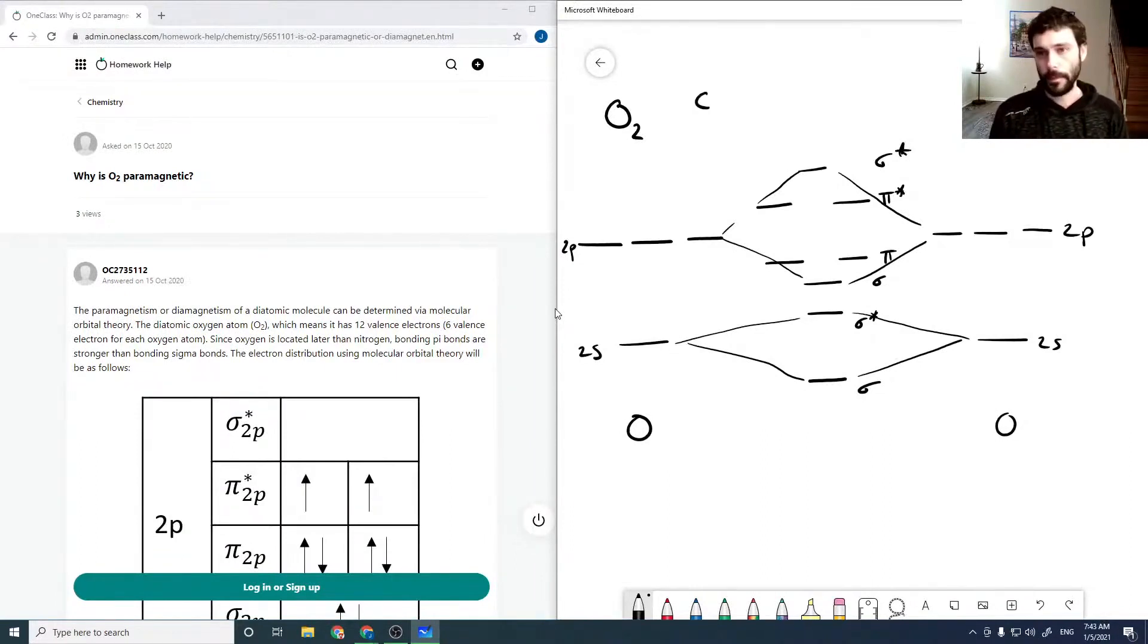It's good to remember that for oxygen and fluorine, this is what it looks like. But before oxygen, we actually flip the pi and the sigma levels. So these two down here would be flipped for carbon and nitrogen, but we don't need to worry about that here because we're dealing with oxygen. So each oxygen atom has 6 valence.